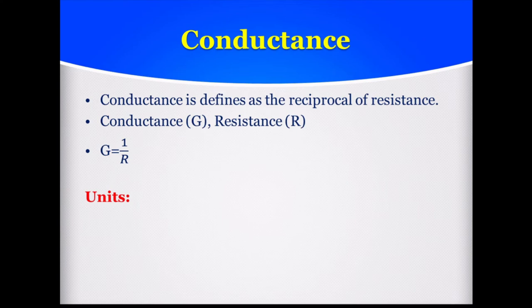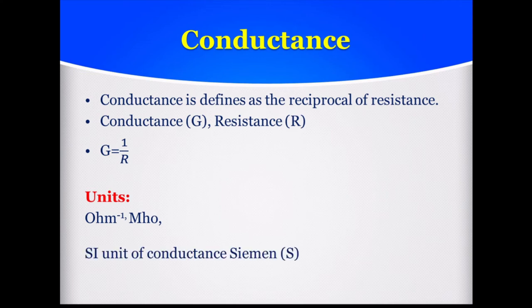Now, the unit of conductance: since resistance has the unit Ohm and conductance is the reciprocal of resistance, the unit for conductance is Ohm inverse, also called Mho. In BSc Part 2, there are a number of experiments which depend upon conductance measurement. The SI unit of conductance is Siemen, denoted by capital S. 1 Siemen equals 1 Ohm inverse.